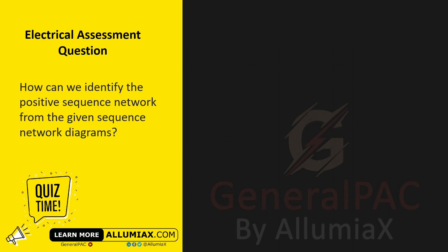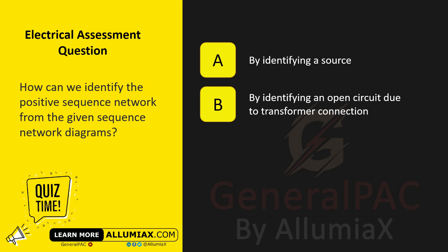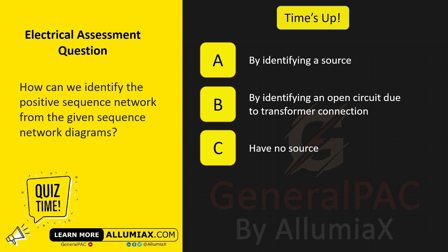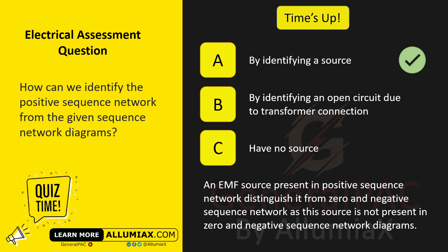How can we identify the positive sequence network from given sequence network diagrams? A. By identifying a source. B. By identifying an open circuit due to transformer connection. C. Have no source. The answer is A — by identifying a source. An EMF source present in the positive sequence network distinguishes it from zero and negative sequence networks, as this source is not present in zero and negative sequence network diagrams.